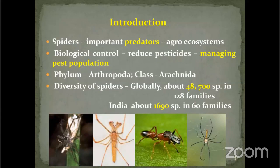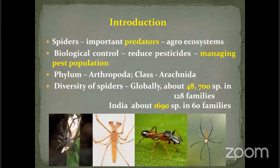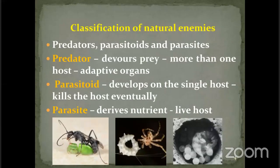Spiders belong to phylum Arthropoda, class Arachnida. Globally, there are 48,700 species known in 128 families. In India, only 1,690 species in 60 families are known — based on a 2008 checklist prepared by Manju Saliwal and co-workers. With active researchers, at least 25 to 30 new species of spiders are described every year, with the help of citizen scientists like Abhijit sir.